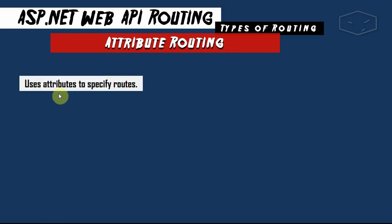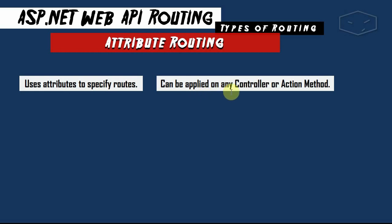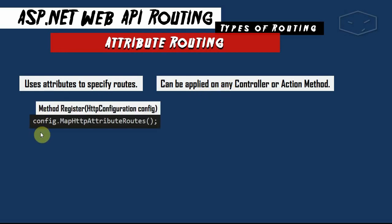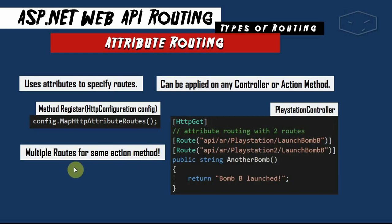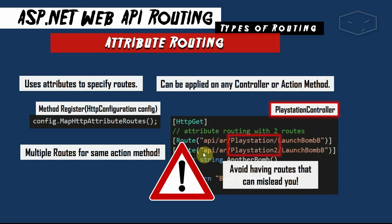Now let's talk about attribute routing. It uses attributes to specify routes and can be applied to any controller and action. You have to register it with the line config.MapHttpAttributeRoutes. After that, we can use the Route attribute on actions. We can also configure multiple routes for the same action — for example, api/ar/playstation/launchbomb and api/ar/playstation2/launchbomb both mapping to the same action.